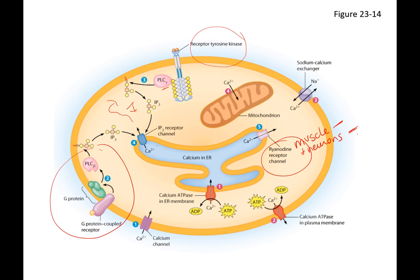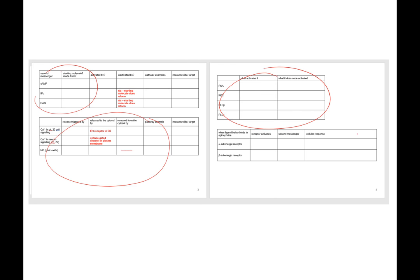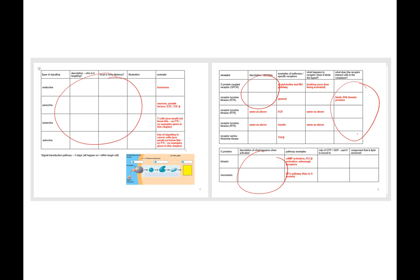Take some time, fill out the charts, look through the pathways, go through the objectives, and when you come to the quiz, the unit exam, and the final exam, you'll have these resources to help you sort through what these receptors do, who they interact with, what the second messengers do, how they're created, and who they interact with.